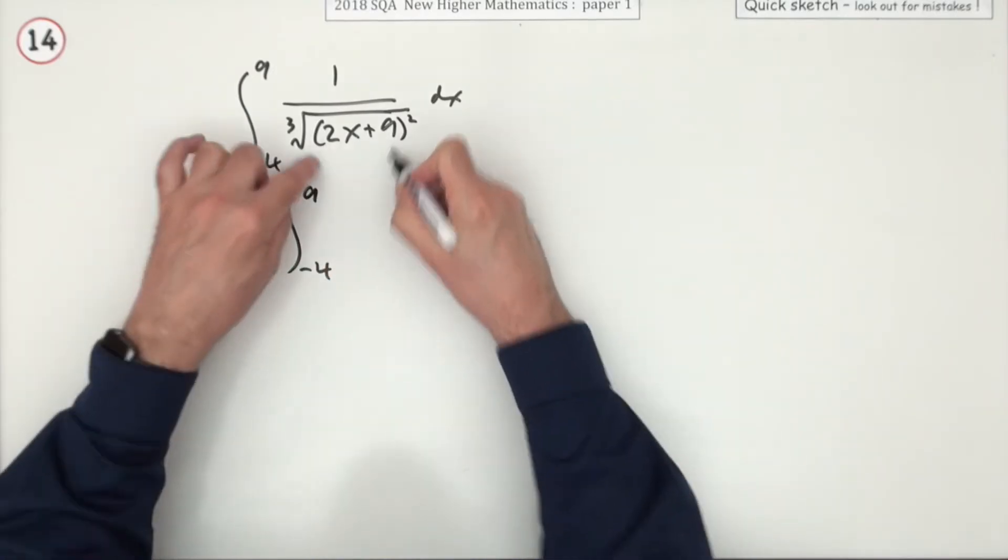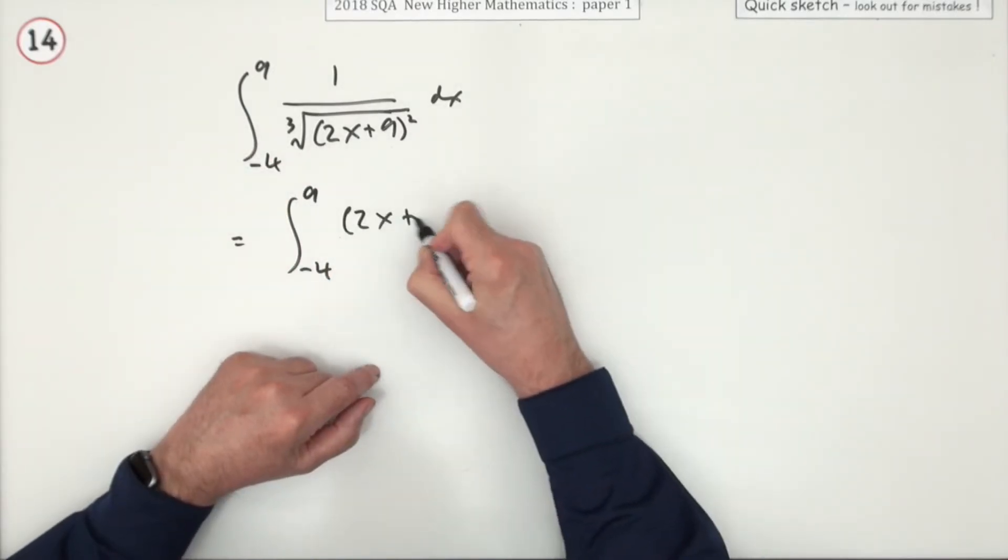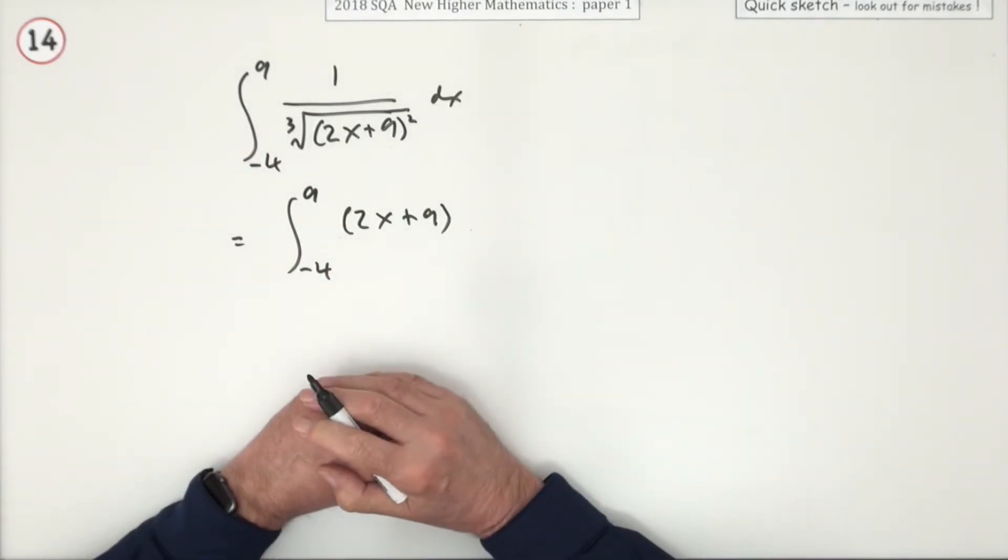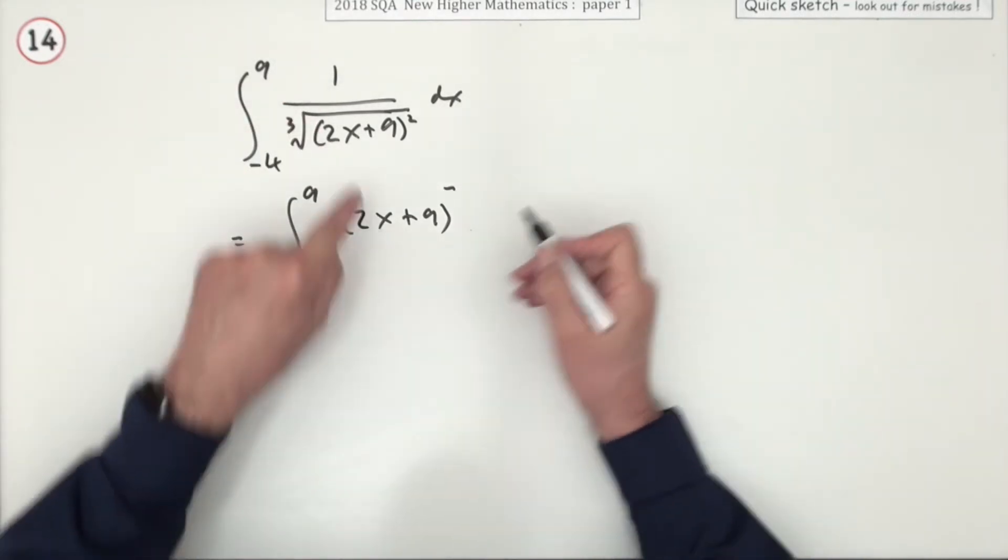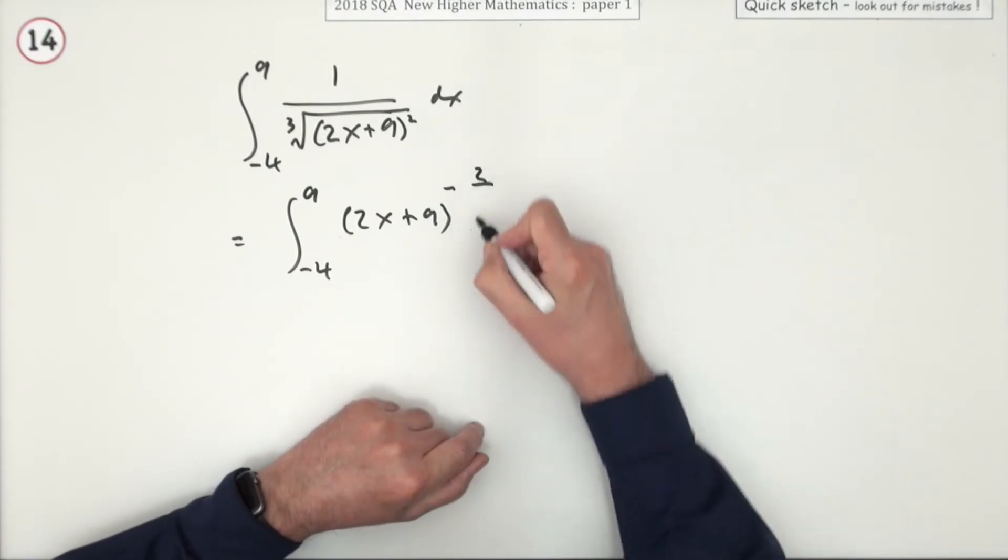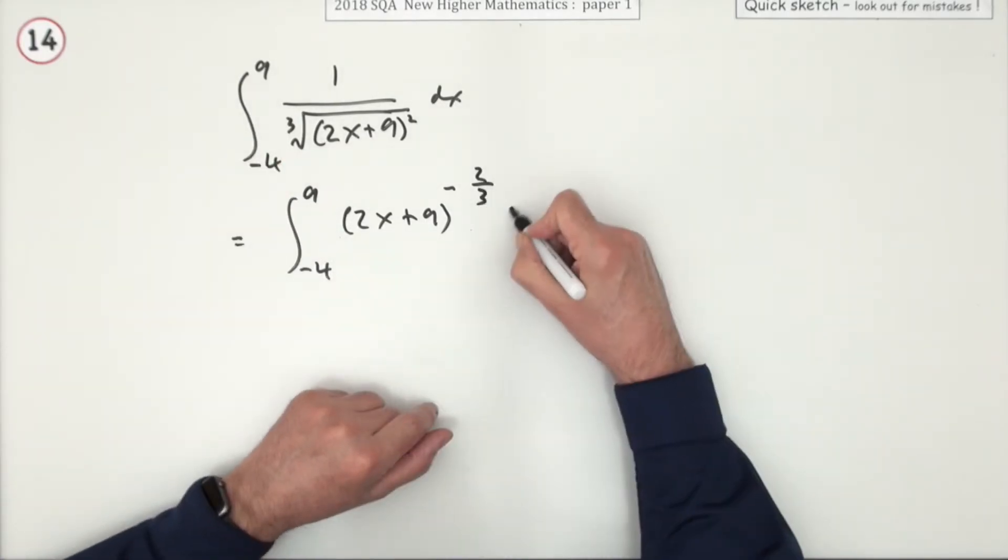It's negative 4 to 9 of the inner part is 2x plus 9. There's the inner function. What's happening to it? Well, it's underneath, so it's got negative power. It's power 2, the 2 goes on top. It's root 3, the 3 goes underneath.